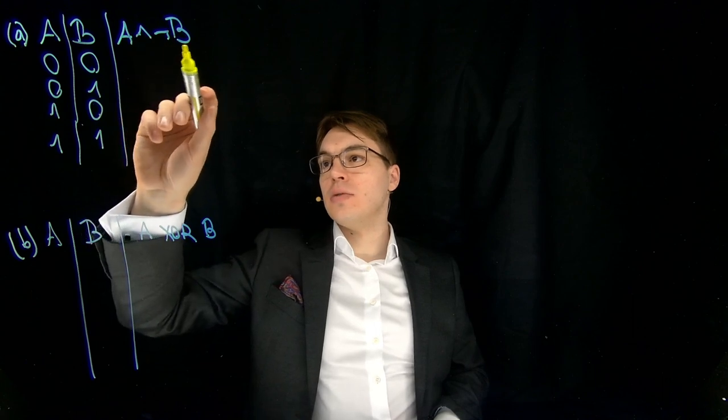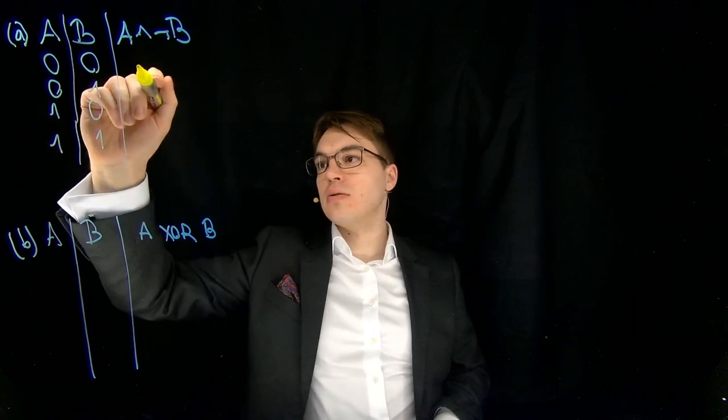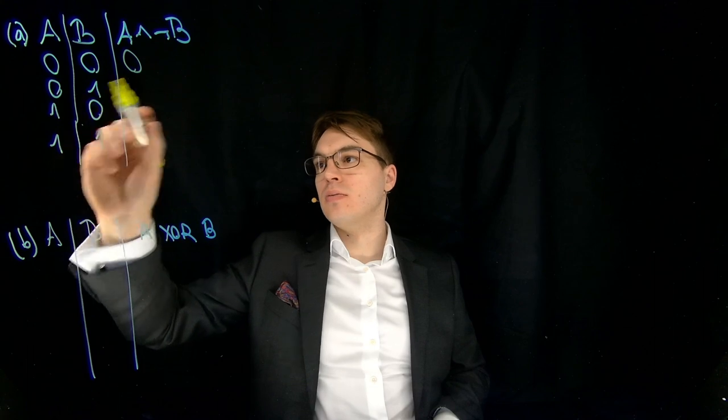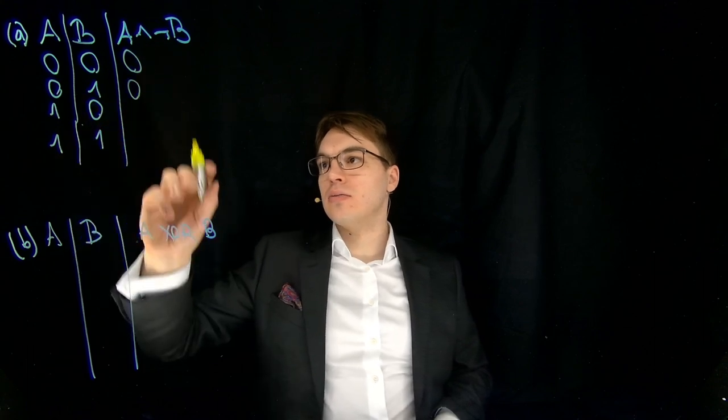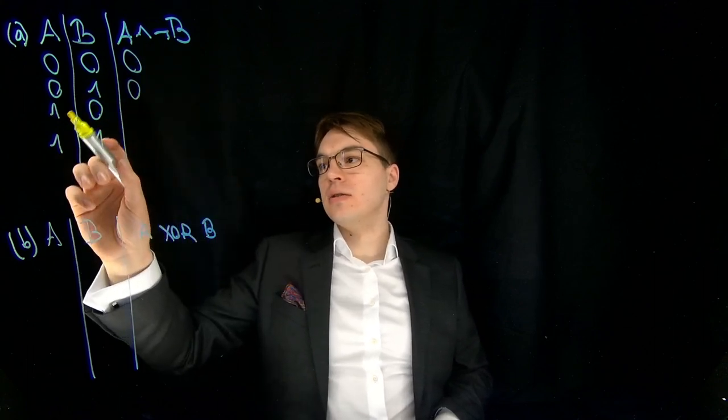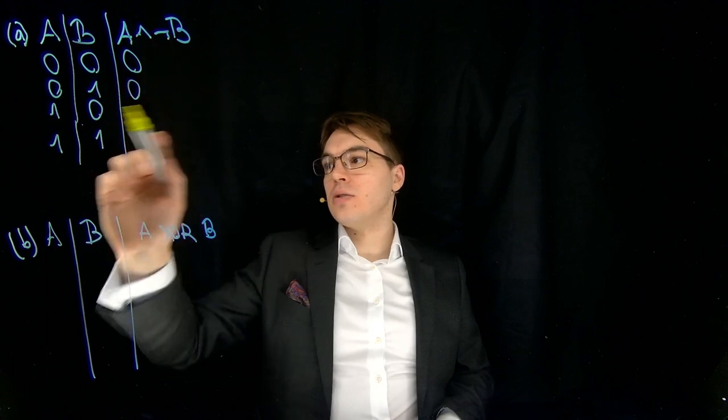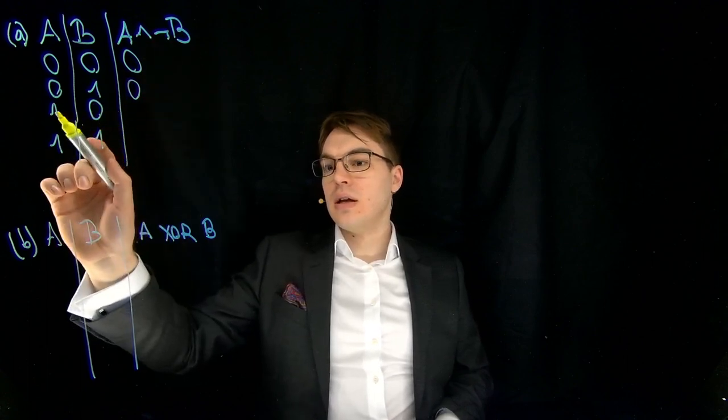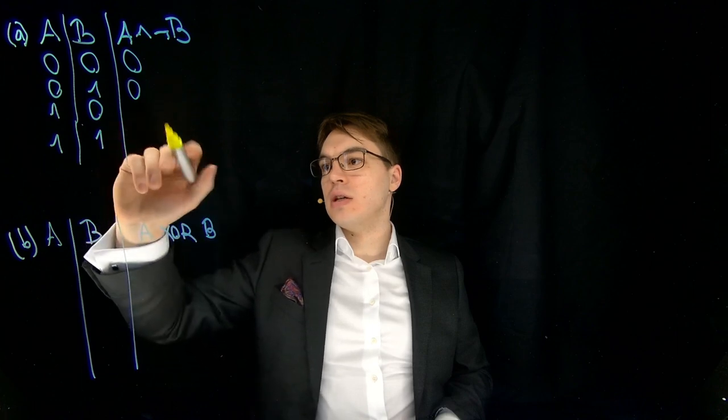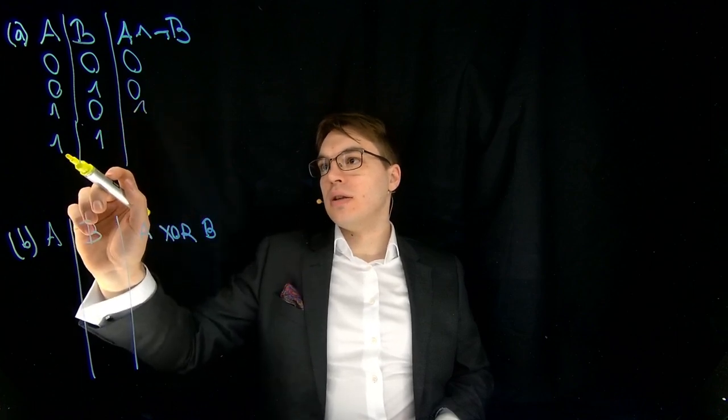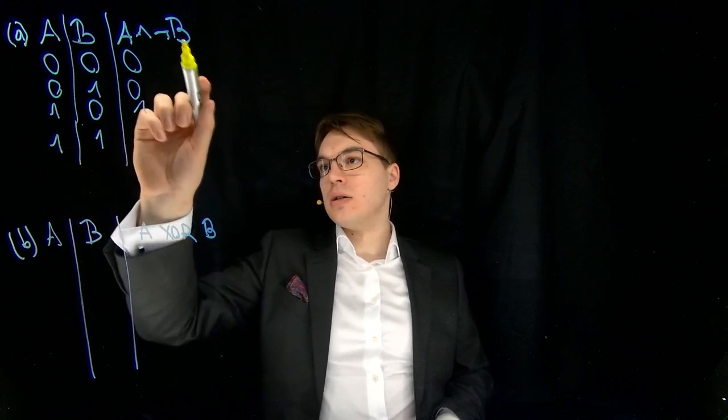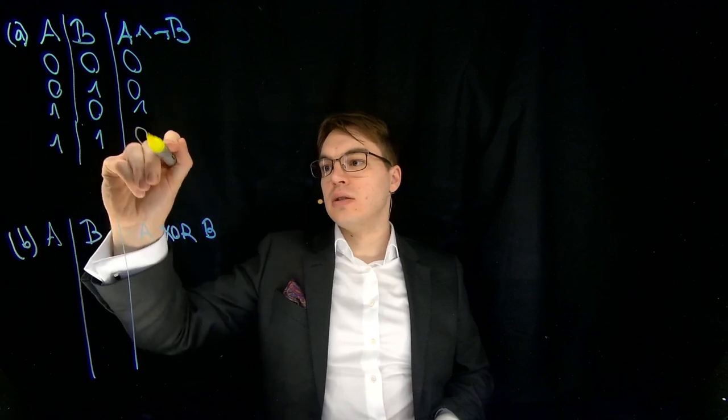So A and not B, so A is 0 here, so this will also be 0. Again A is 0, so we can't have this here. A and not B, so not B is 1, but here in this case we have A, but not B is 0, so we get 0 again.